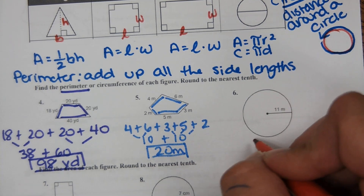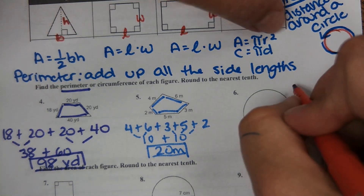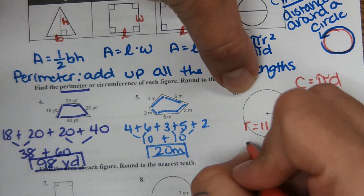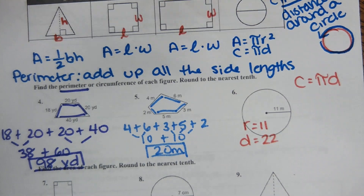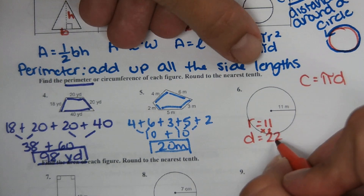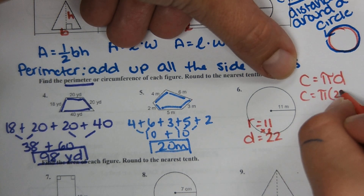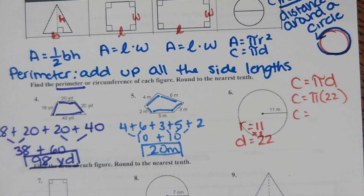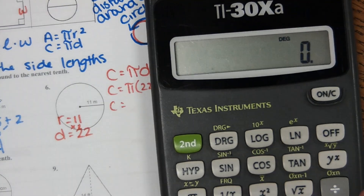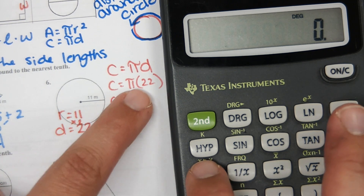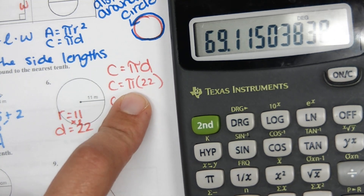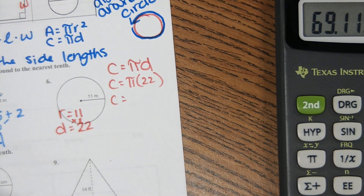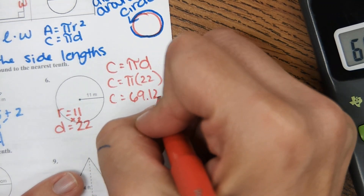For a circle we can't add up side lengths, so we find the circumference — the distance around it. Circumference is pi times diameter. They show us the radius is 11, so diameter would be 22. Circumference equals pi times 22. Using the pi button on the calculator, pi times 22 gives 69.12, so approximately 69.12 meters.